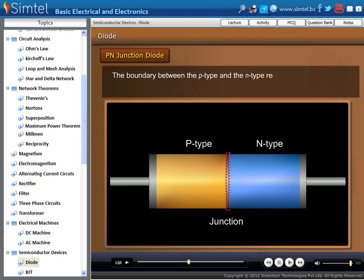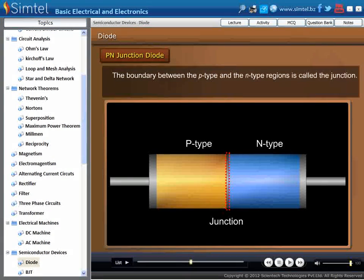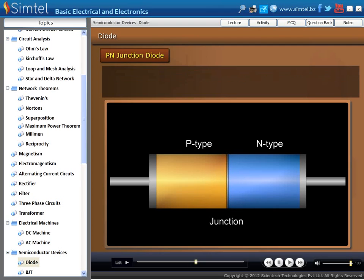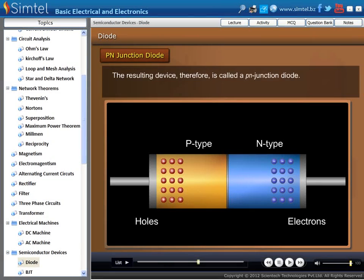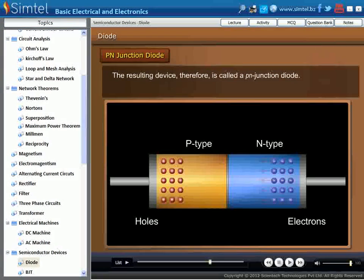The boundary between the P-type and the N-type regions is called the junction. The resulting device, which is made by P- and N-type of semiconductor material along with a depletion layer, is known as P-N junction diode.